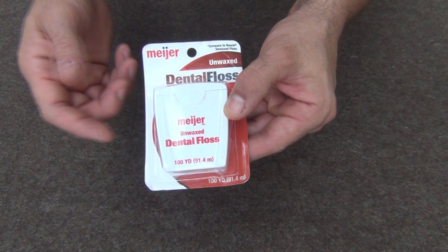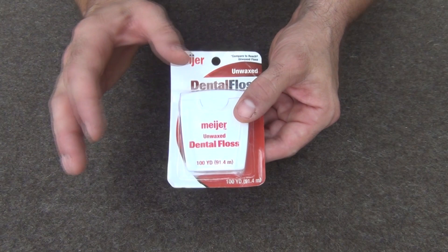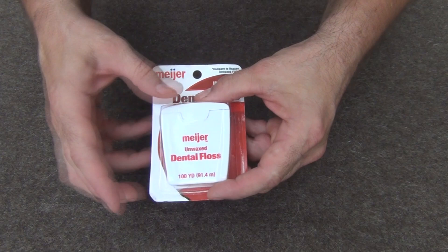So I got this box, and this is unwaxed dental floss. You could use waxed if you prefer, but it's also unscented. I didn't want any mint scent or anything like that for possibly scaring away the fish. I just wanted to have plain unwaxed dental floss. And so this is 100 yards or 100 meters.